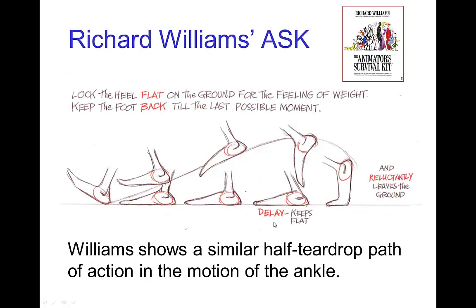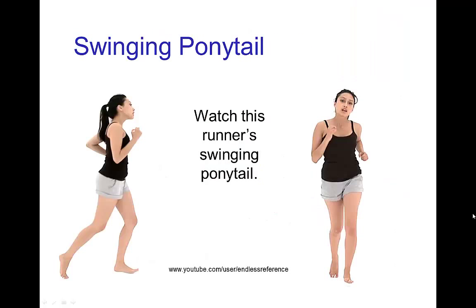These patterns resemble a half-teardrop shape, where the ankle stays in place as the body passes over it, then moves to the next step. The hand does a similar mirror-image pattern as the arm swings out of phase with the leg. Richard Williams points out this teardrop pattern for the motion of the ankle, and it occurs whether the camera is moving with the character — as cycles are usually presented — or if the character is moving past a stationary camera. The pattern is the same; it may be stretched or compressed, but it's still a teardrop pattern.